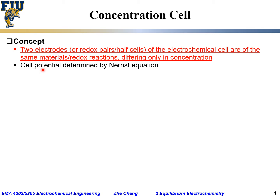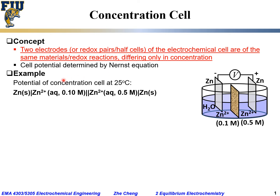The potential for such a concentration cell is still determined by the Nernst equation. Let's take a look at an example: a concentration cell with zinc metal on both sides inserted into a solution containing zinc ions. The only difference between the two sides is that the concentration is different — 0.1 molar on the left and 0.5 molar on the right. We can write the short form of the electrochemical cell with zinc metal electrodes and zinc ion solutions on both sides.